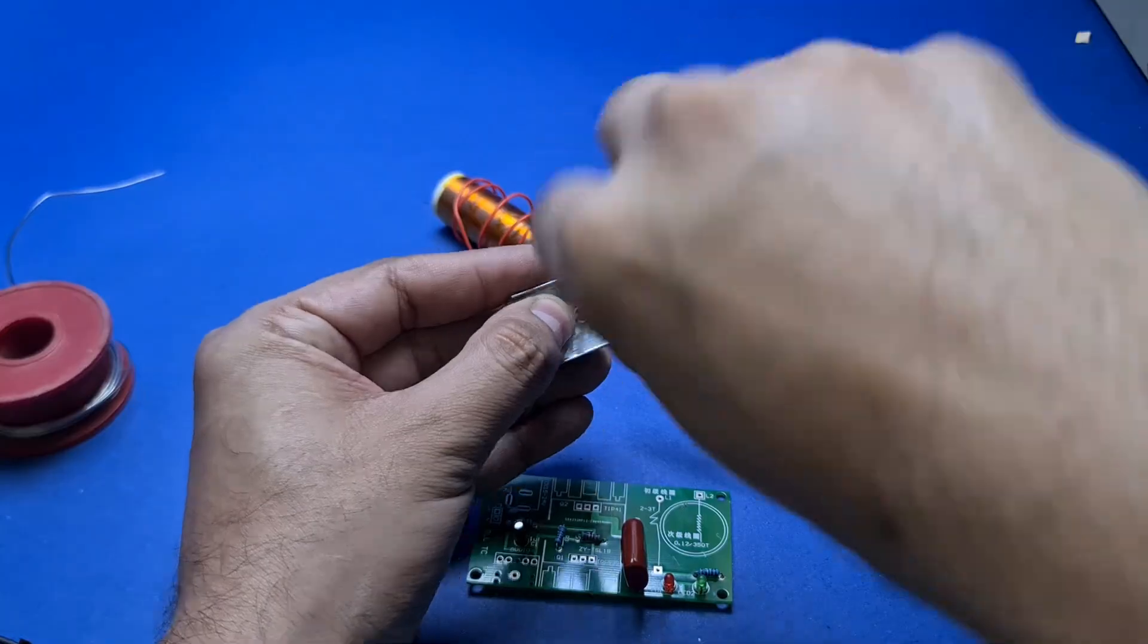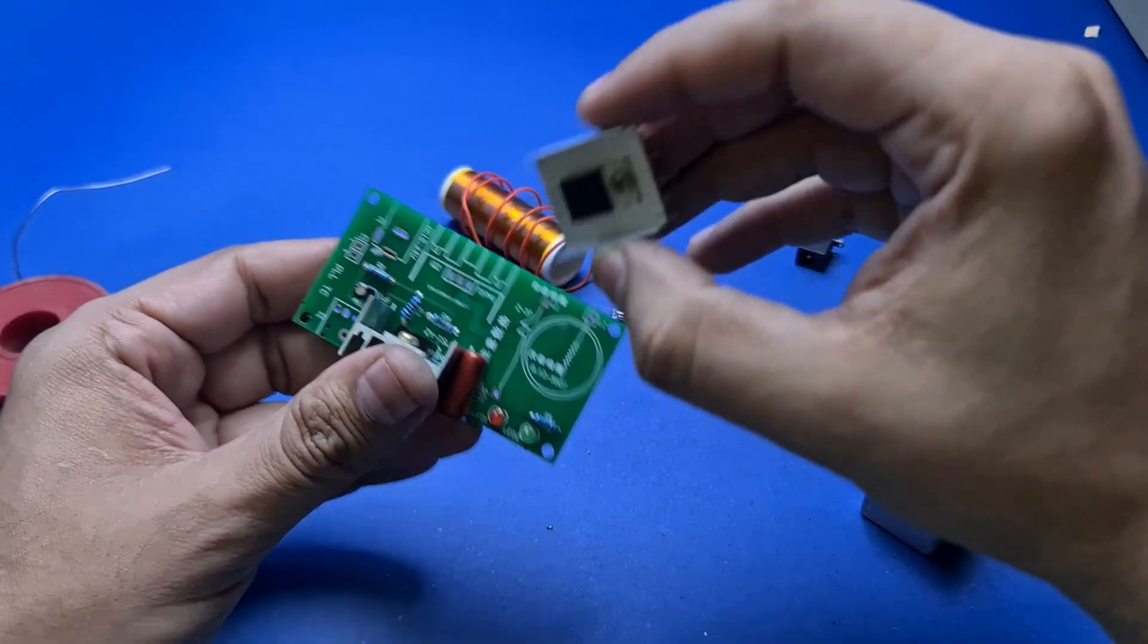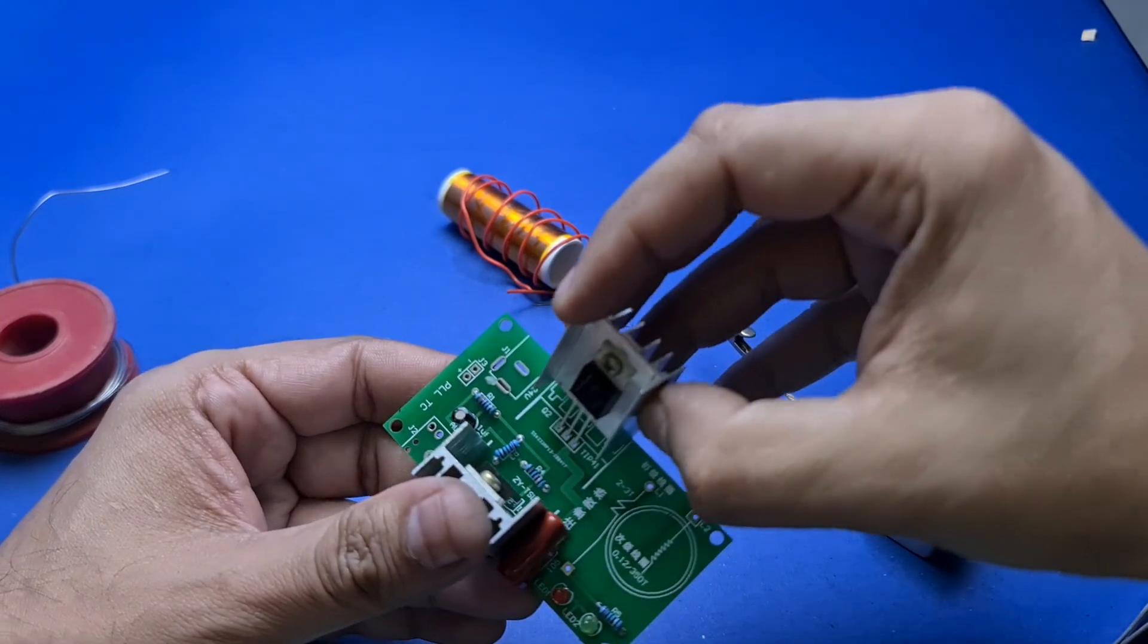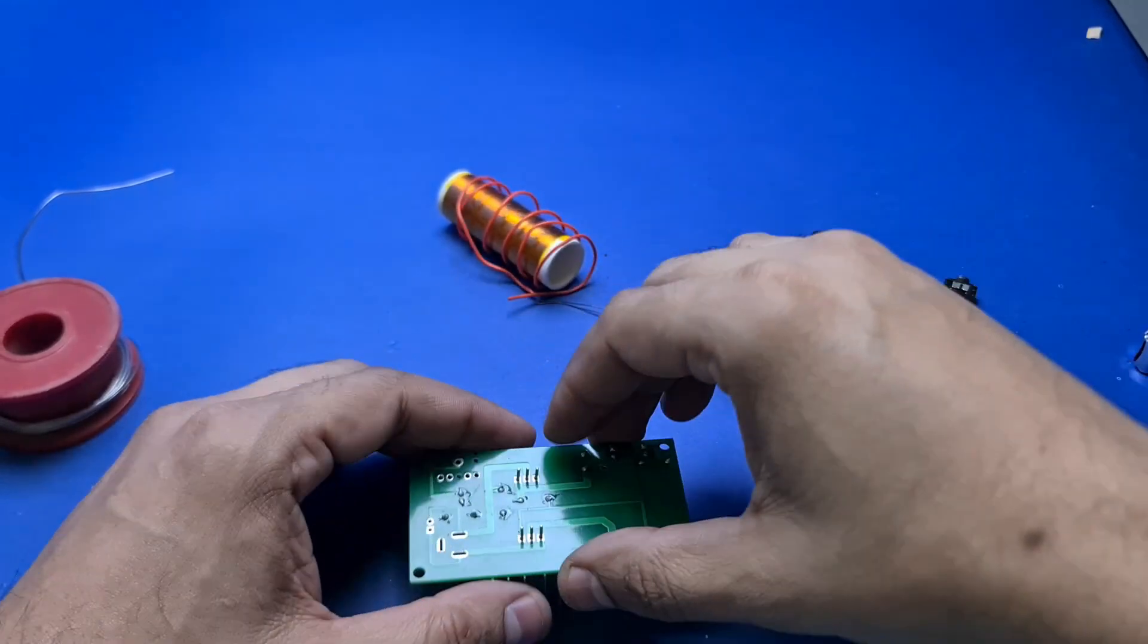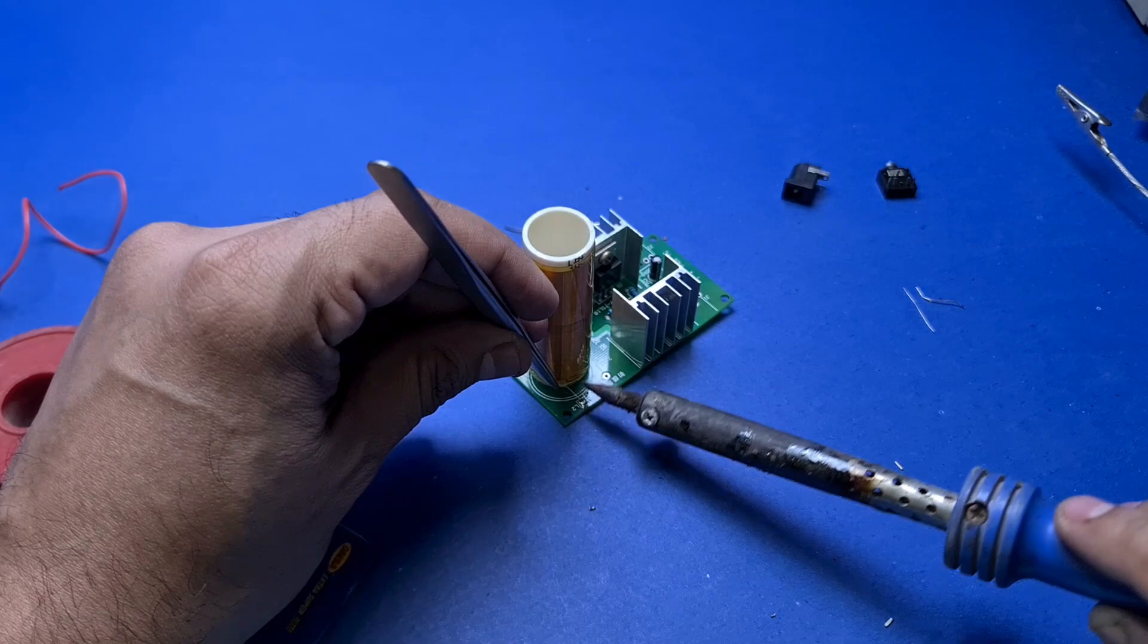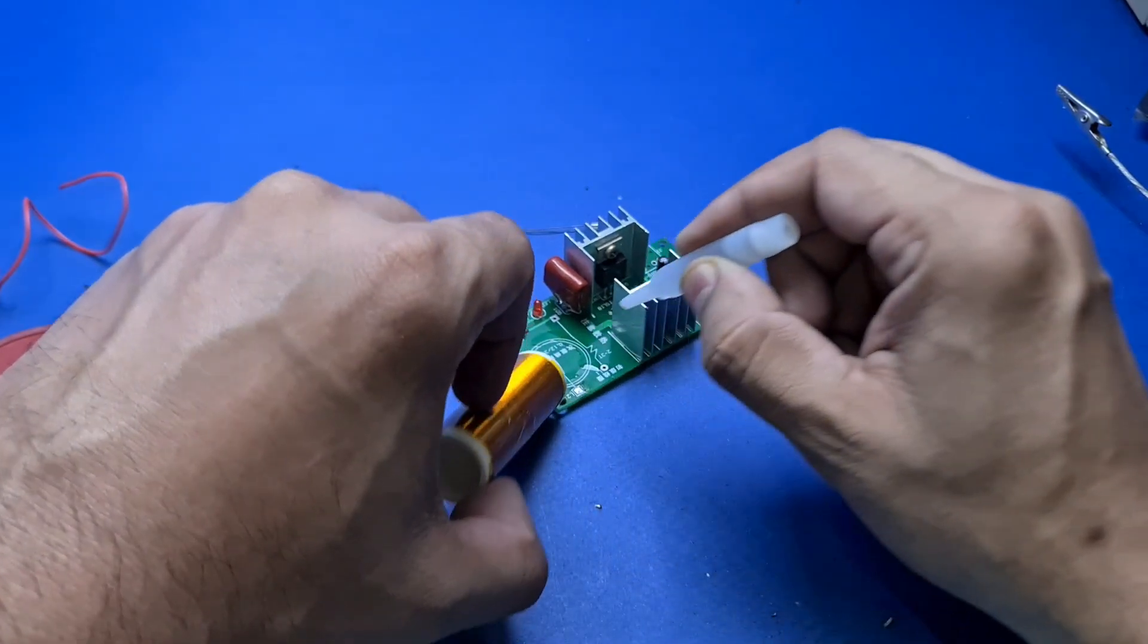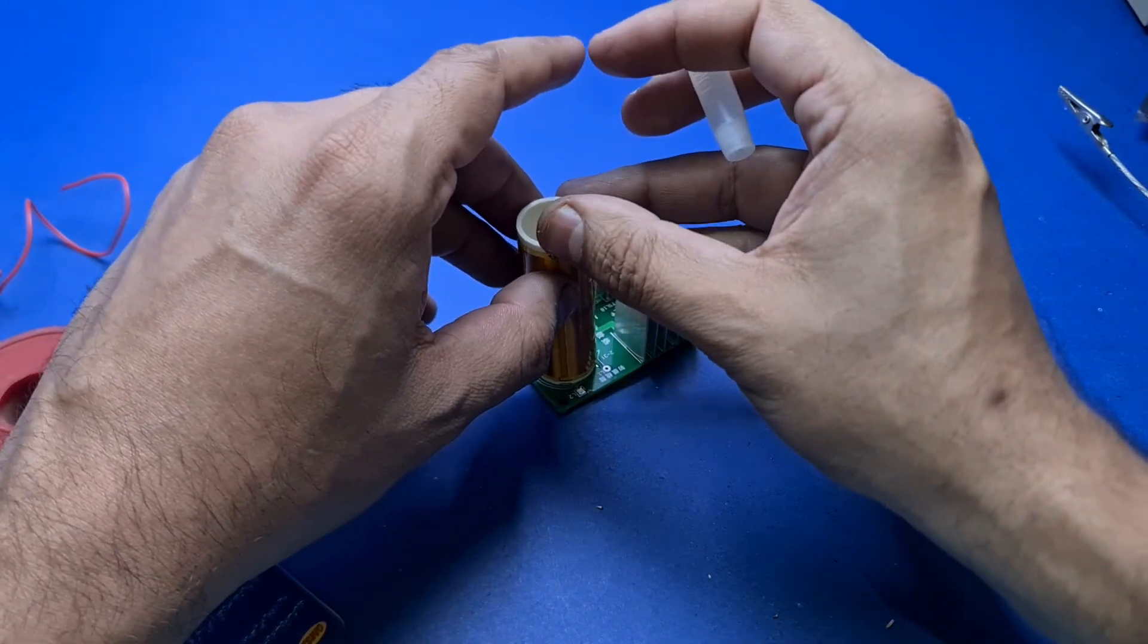You should tightly mount the MOSFET and the main transistor on the heatsink plate before soldering them onto the PCB. Now it's time to add the main Tesla coil to the PCB. First solder the wire to the board and then glue it with the PCB.